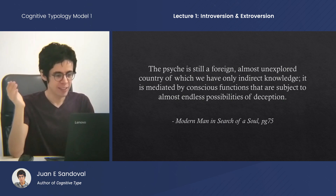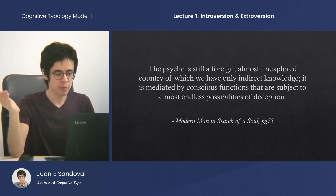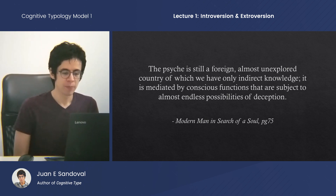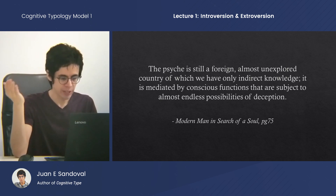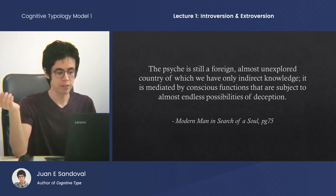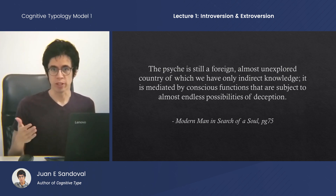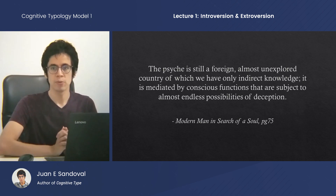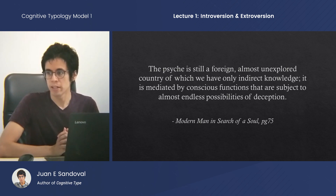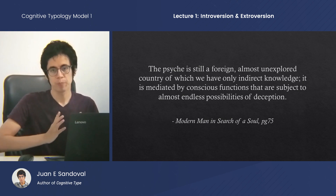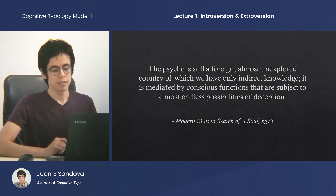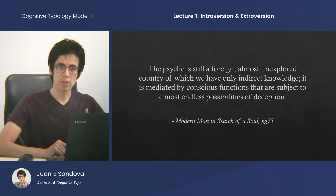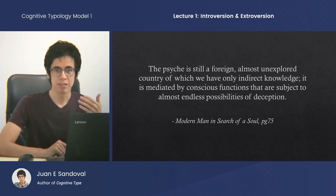Jung says: the psyche is still a foreign, almost unexplored country, of which we have only indirect knowledge. It is mediated by conscious functions that are subject to almost endless possibilities of deception. Jung appears to be lamenting the incompleteness of our knowledge of the human mind. He knew that we were experts at lying to ourselves, despite the fact that we are still one of the best windows into ourselves. We might want to argue we're the best source we have for what's going on in our minds, and yet it's a very bad source — so there's a problem here.